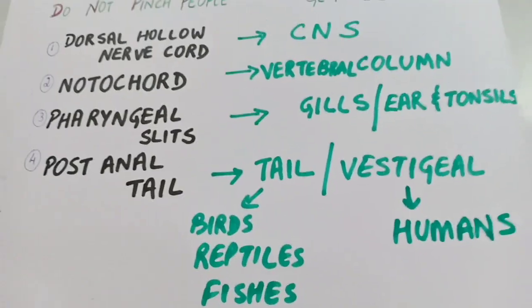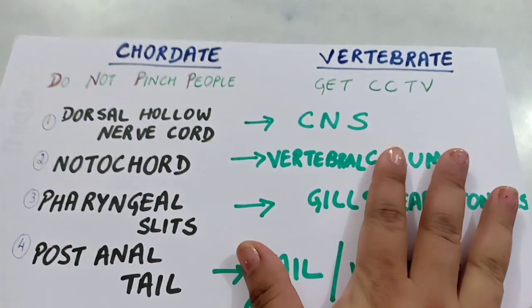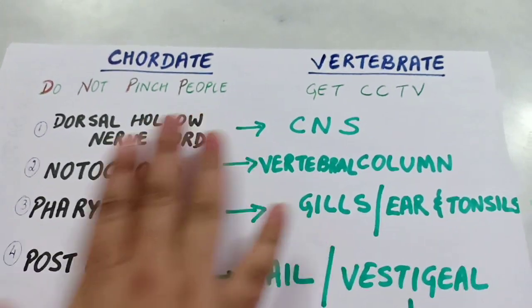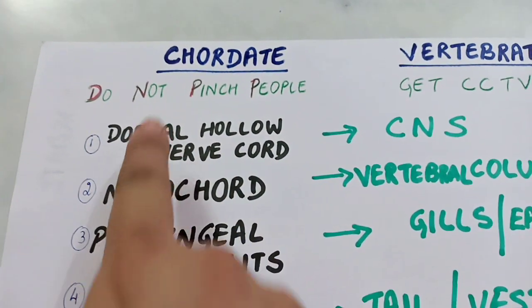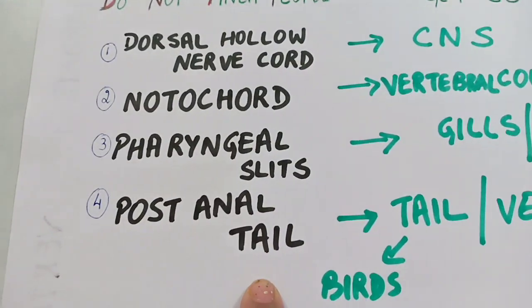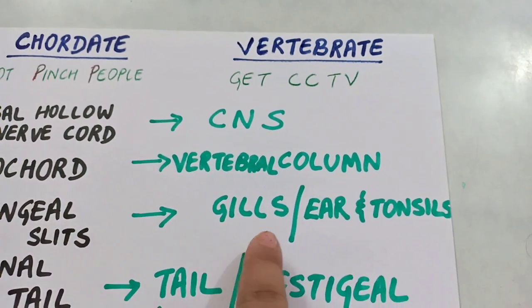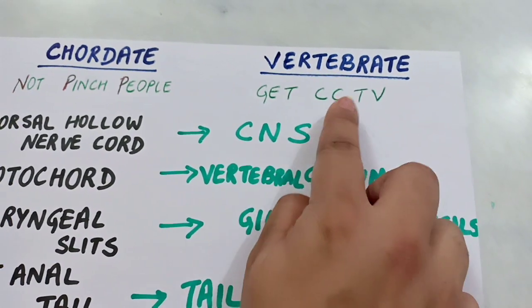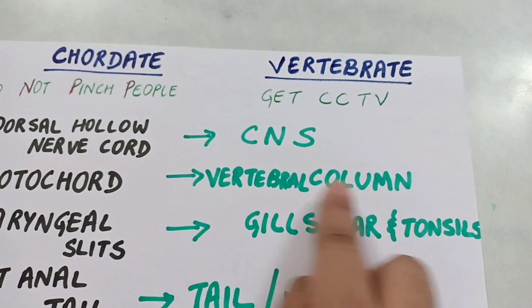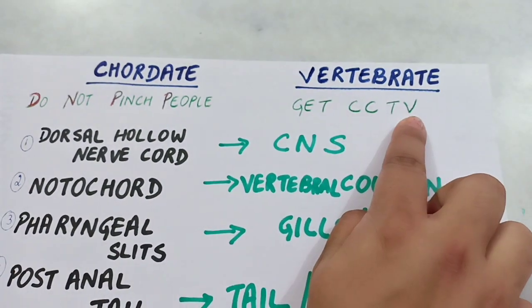So from the features of chordates we have derived the features of vertebrates. 'Do Not Pinch People' stands for dorsal hollow nerve cord, notochord, pharyngeal slits, and post anal tail — features of chordates. 'GET CCTV': GET means pharyngeal slits get converted to gills or ear and tonsils; first C is CNS; second C is vertebral column; T is tail present in some vertebrates; V is vestigial in humans.